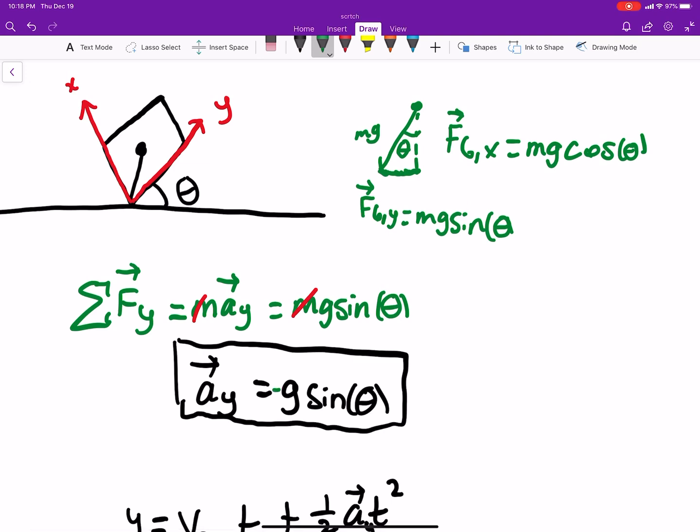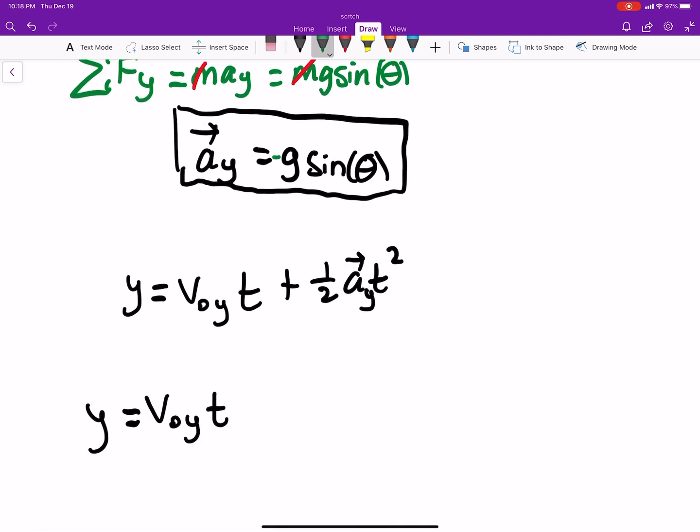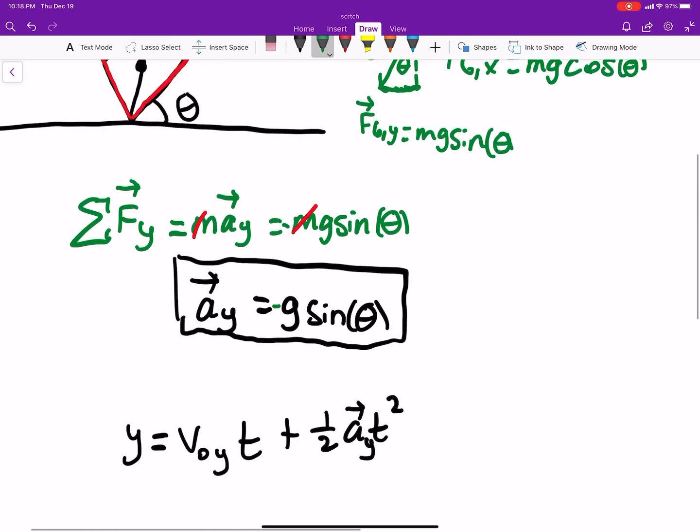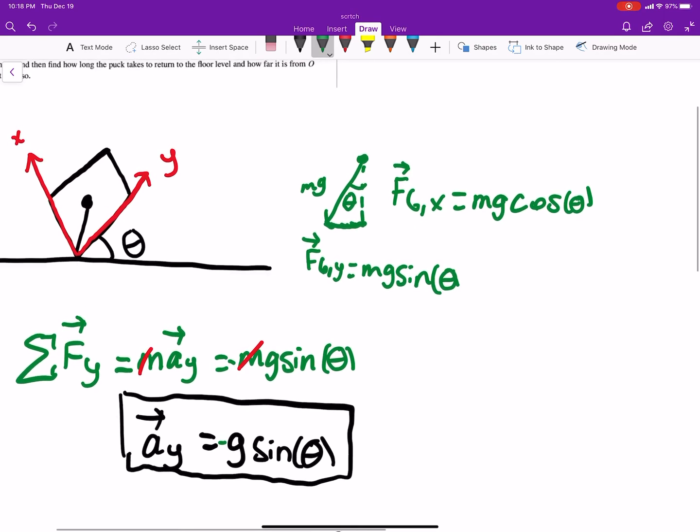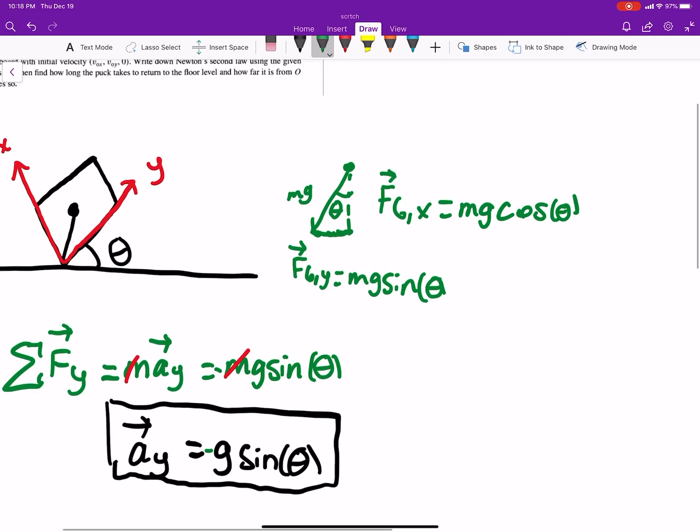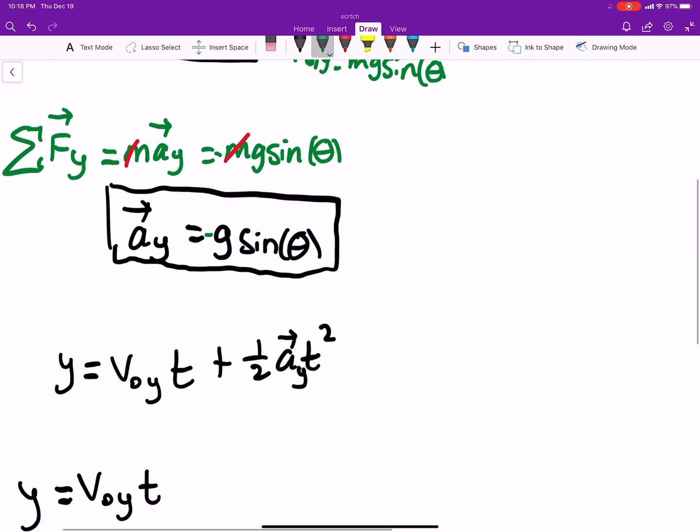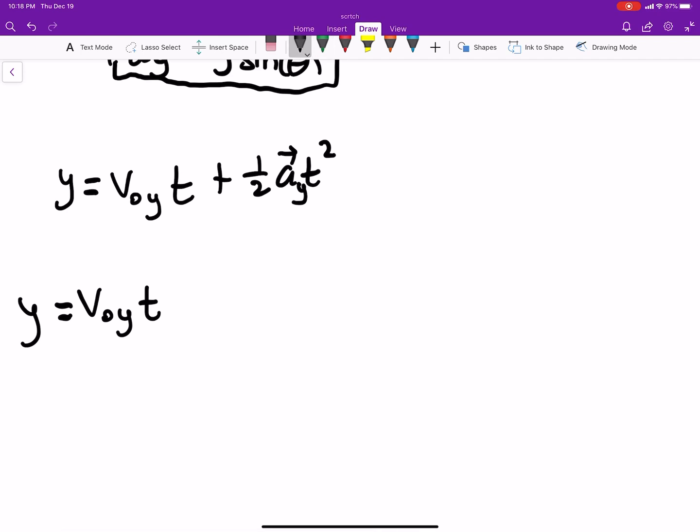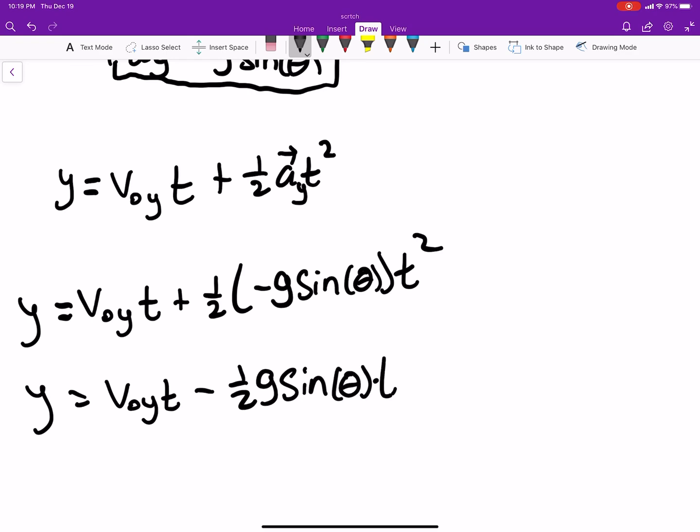Right, yeah, negative g. Sorry about that, forgot the negative. The reason being is because this is left of our origin. So if we plug that in, plus one half minus g sine theta times t squared. Then our y position is equal to v naught y t minus one half g sine of theta times t squared.